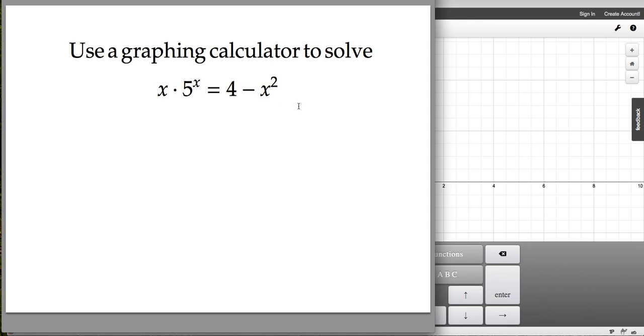This is an equation that we don't have any way to solve other than using the technology to approximate the solution. So I want to remember my equation is x times 5 to the x equals 4 minus x squared. Jot that down on a piece of paper here.